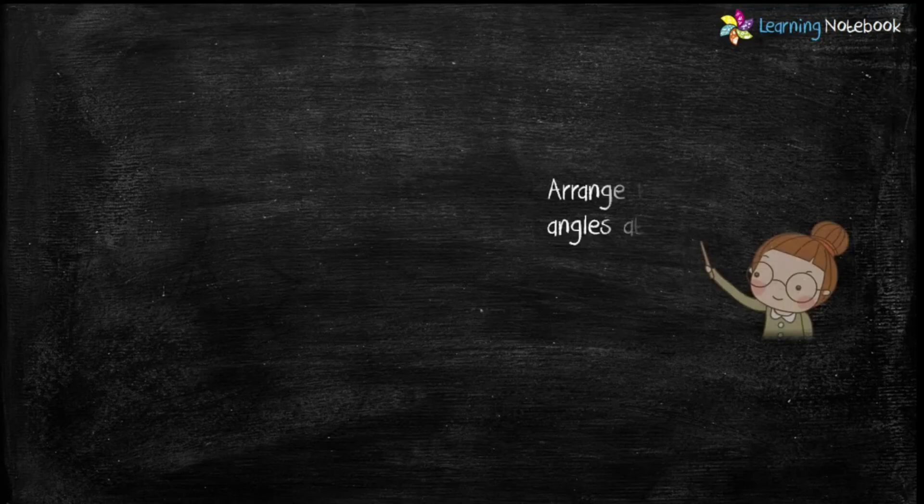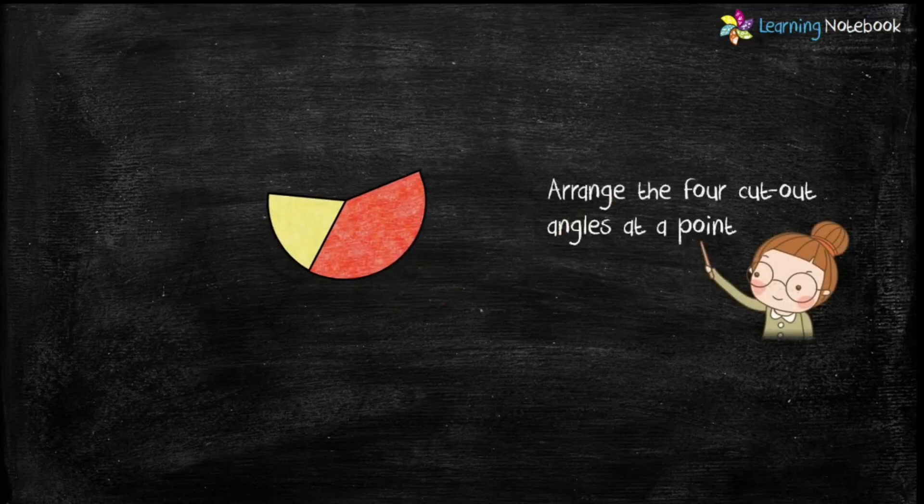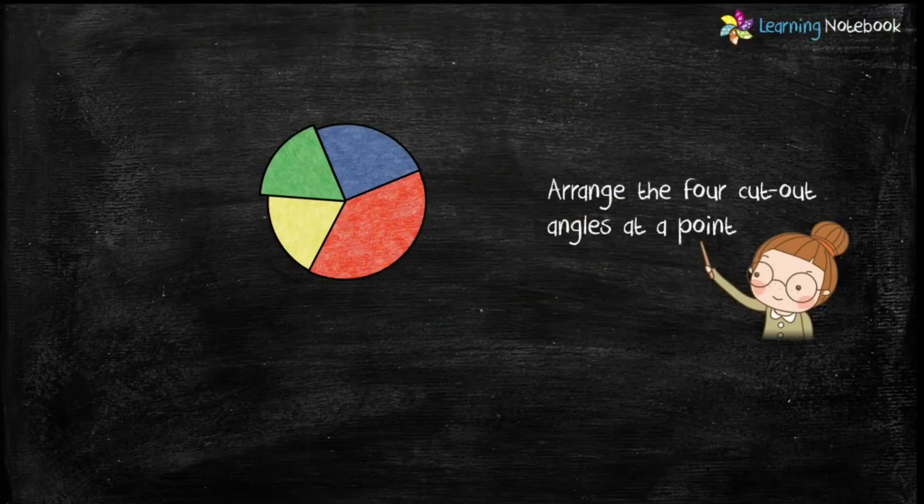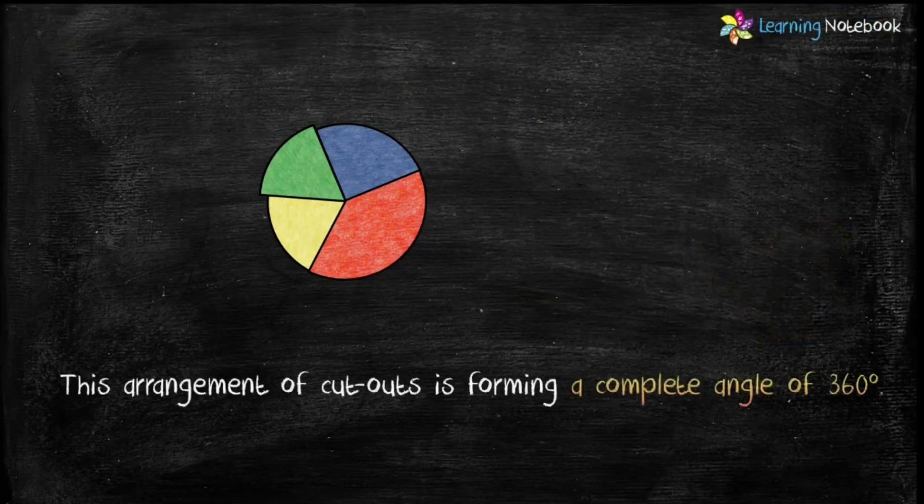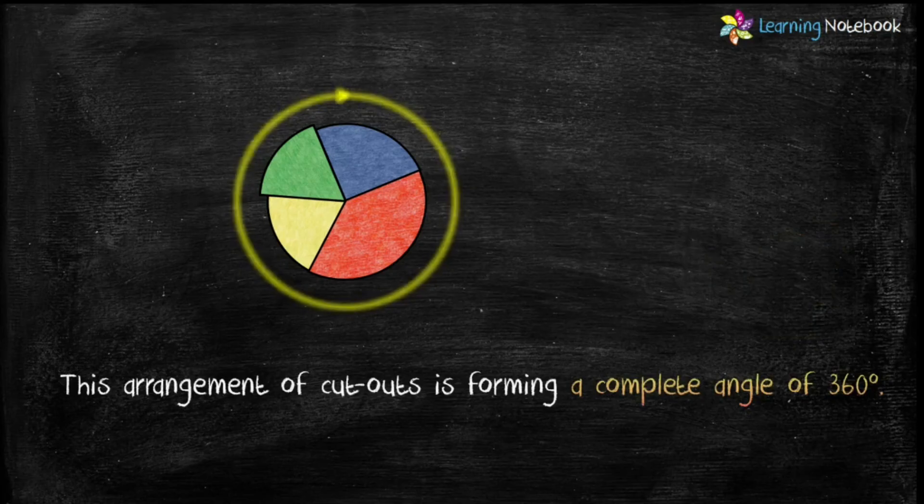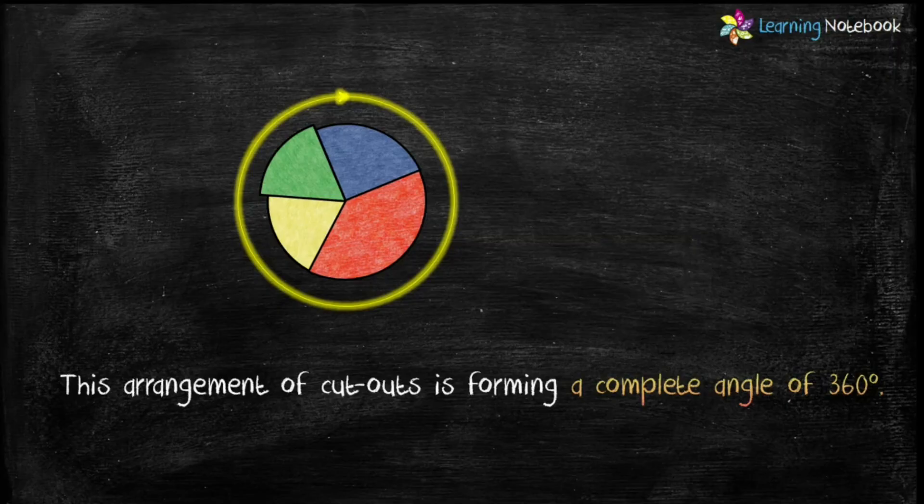Now students, let's arrange these four cut-out angles at a point as shown here. You will observe that this arrangement of cut-outs is forming a complete angle of 360 degrees.